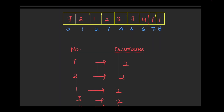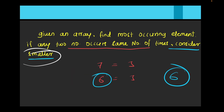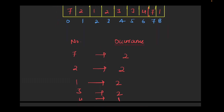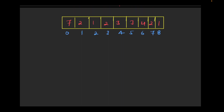In the second test case: 7 has occurred 2 times, 2 has occurred 2 times, 1 has occurred 2 times, 3 has occurred 2 times, and 4 has occurred 1 time. Four numbers all occur the same number of times, so we consider the smaller number. The smallest among them is 1, so the final answer is 1.